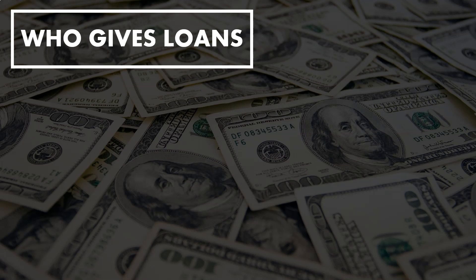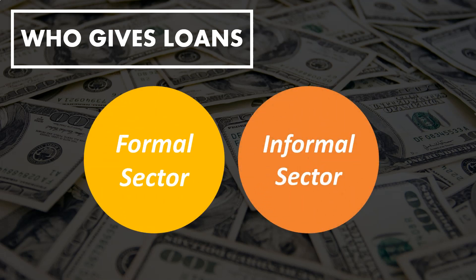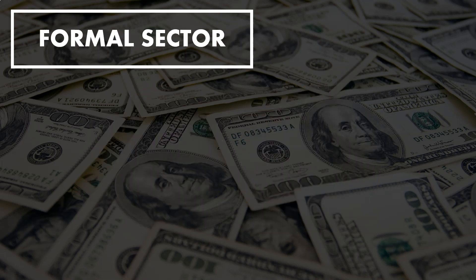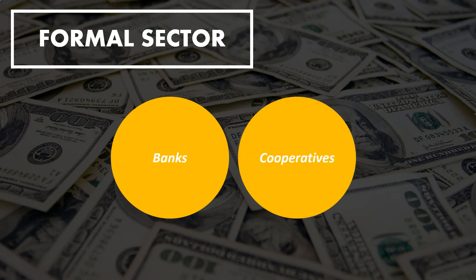Who gives out loans? In India, there are two main sources of credit: formal sector and informal sector. The formal sector is authorized by the government, whereas the informal sector is managed by private individuals. Let's look at the formal sector first. Within the formal sector, there are two sources of credit: banks and cooperatives.